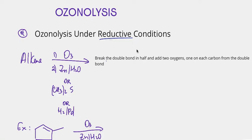In this lesson we will learn how to easily predict the product of an ozonolysis reaction. There are basically two ozonolysis reactions that can happen. The first one is ozonolysis that happens under reductive conditions.